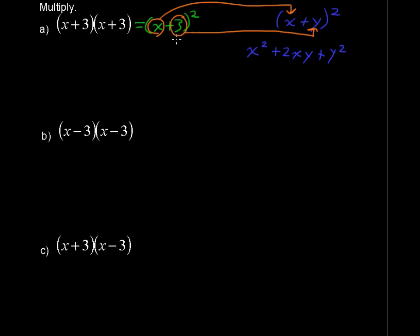So in this case the y is the 3, so instead of writing 2xy, I'm going to write 2 times x times 3. So let's write x squared plus 2 times x times y, or the 3. That's our second term.